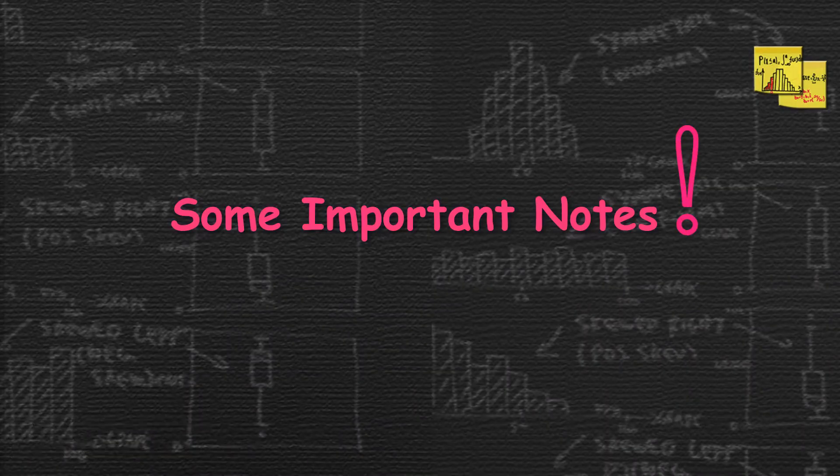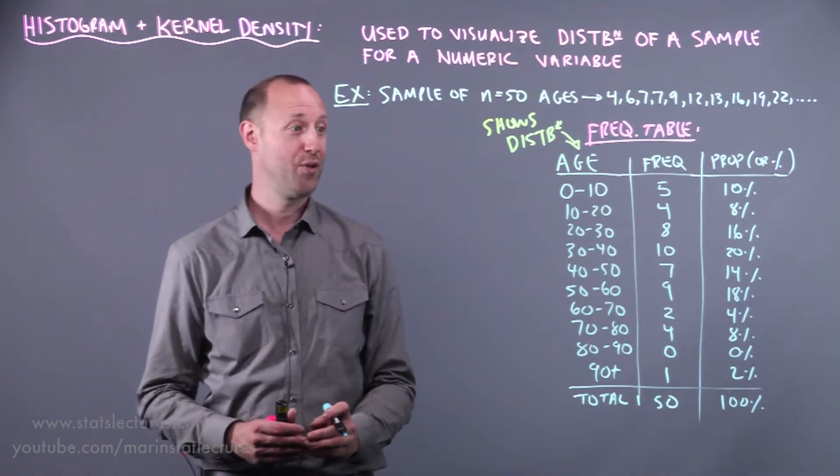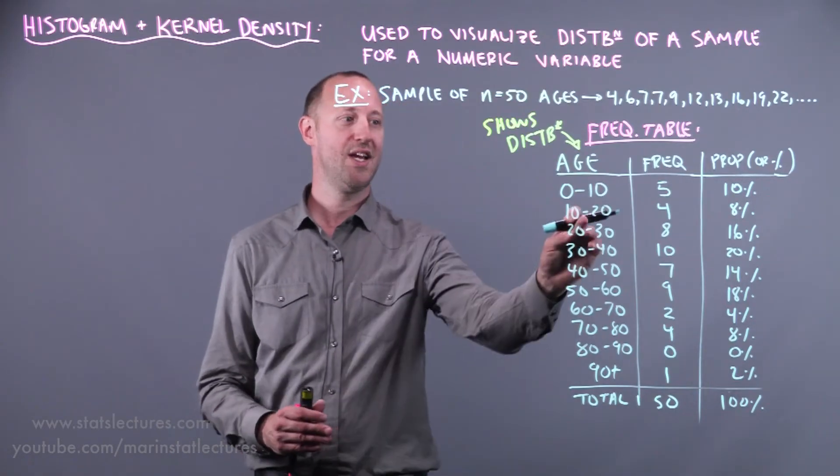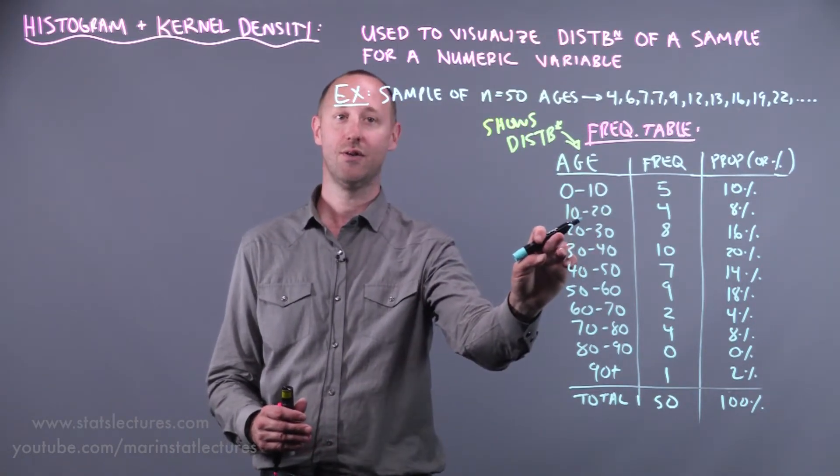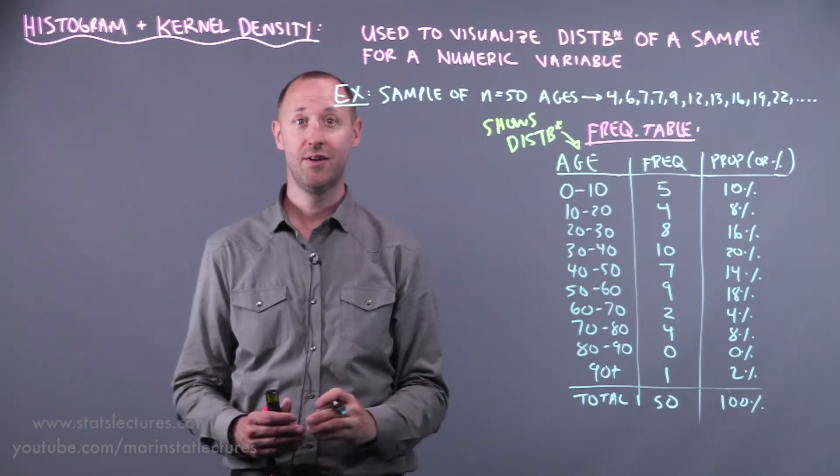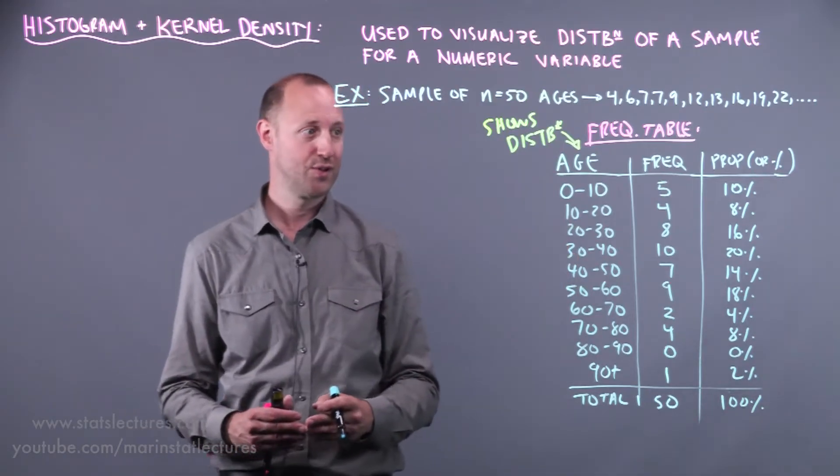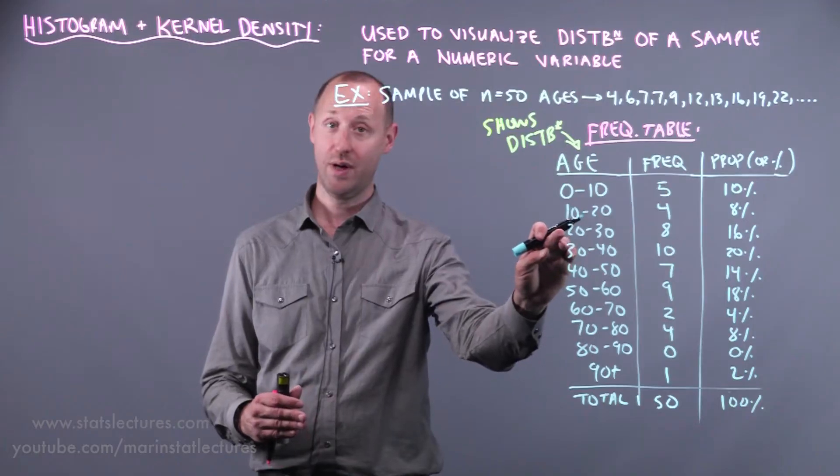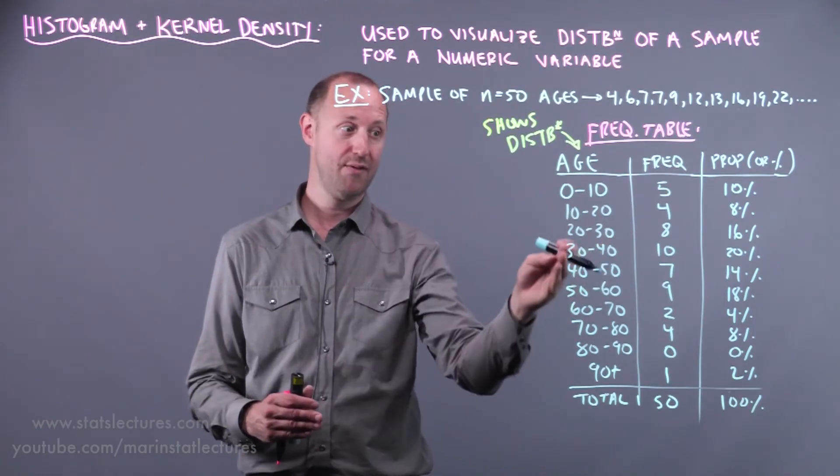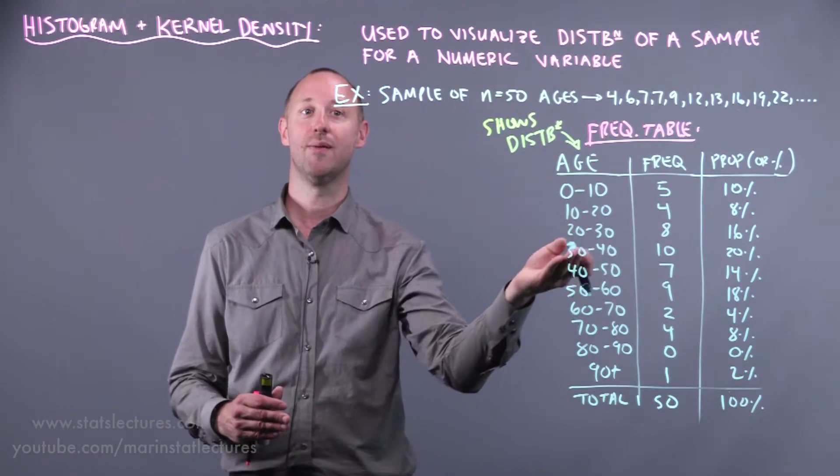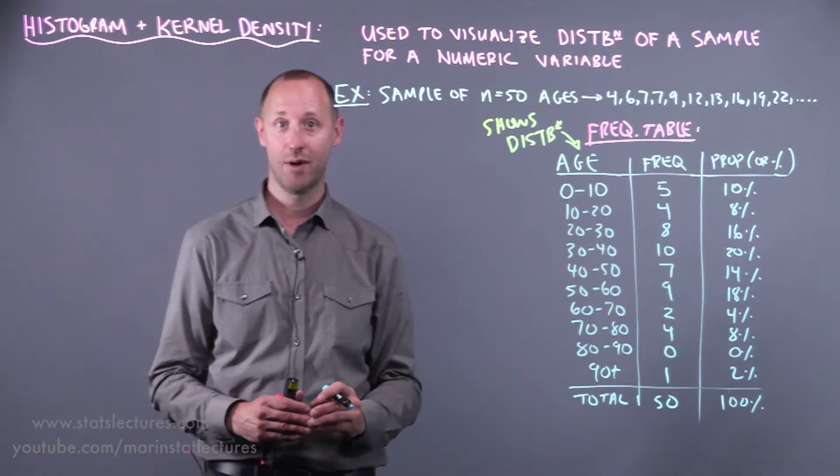Now a few things to mention. What do we do with observations that fall on the border? What I mean by that is an age of 20. Does it go in this bin here or this bin here? It doesn't really matter as long as you're consistent. So if you decide that an age of 20 is going to go to the 20 to 30 bin here or the one above, then any ones that fall on the border should always go to the category above.